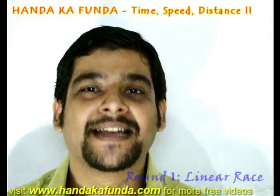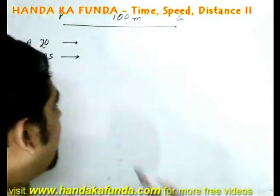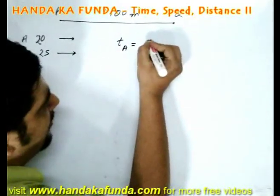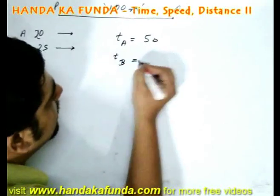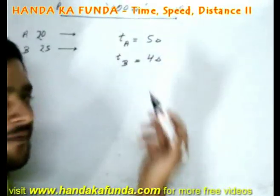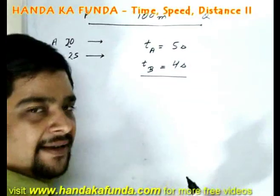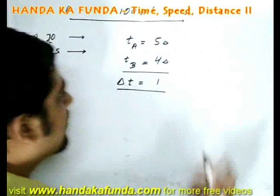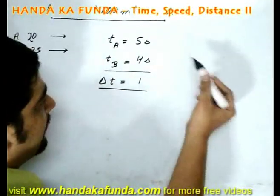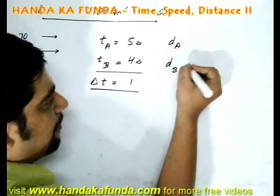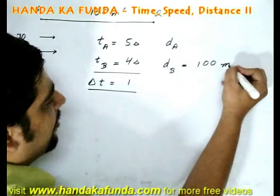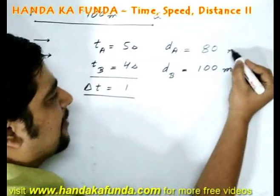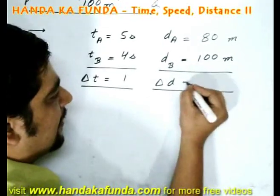Let us look at some cases in a linear race of 100 meters. There are two people A and B. Speed of A is 20 meters per second and B is 25 meters per second. Time taken by A is 5 seconds and by B is 4 seconds. Since B is the faster runner, he wins. B beats A by a difference of 1 second. In distance terms, speeds are in ratio 5:4, so distances covered are also in ratio 5:4. When B finishes 100 meters in 4 seconds, A covers only 80 meters. So B beats A by a distance of 20 meters.